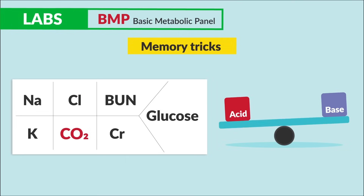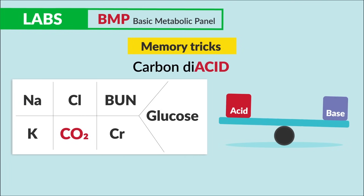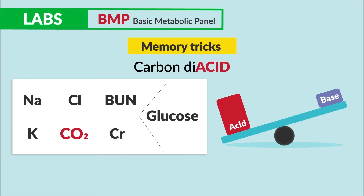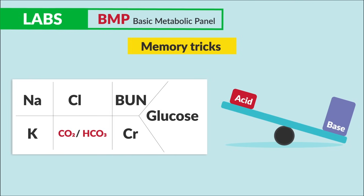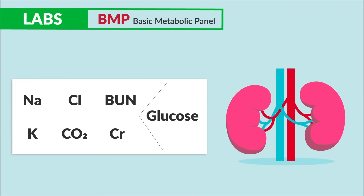CO2 is carbon dioxide, which helps maintain acid and base pH balance. I call it 'carbon diacid' since too much can put the body into an acidotic state. This area can also have HCO3, or bicarb, which also maintains pH balance, pushing the body into an alkalotic state — so just think 'base for bicarb.'